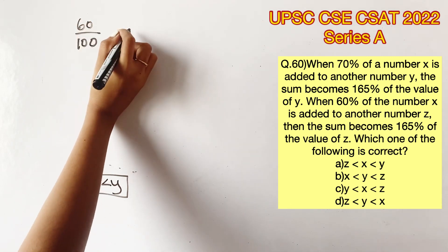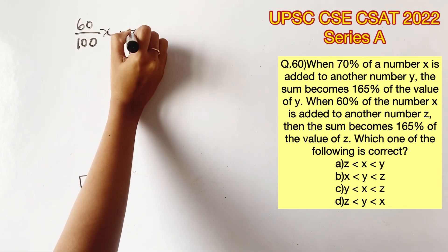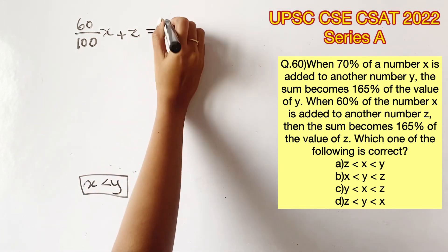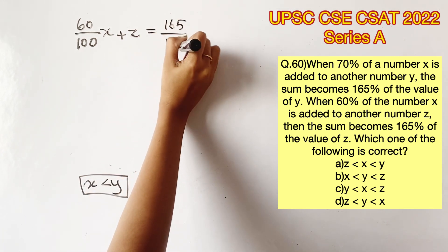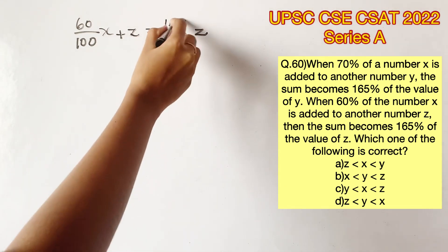The next statement says 60% of a number x is added to another number z. Then the sum becomes 165% of the value of z. We can represent that in the form of an equation.